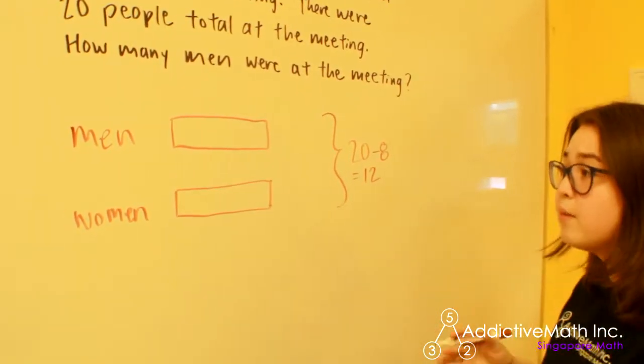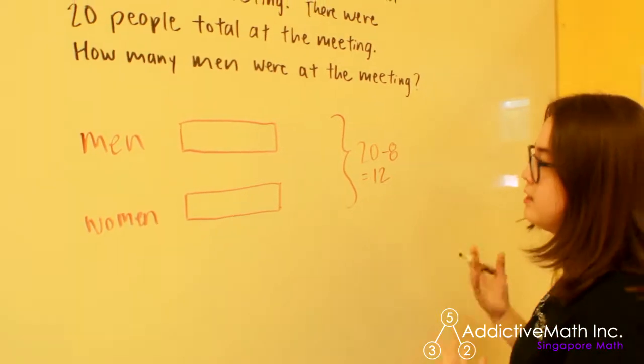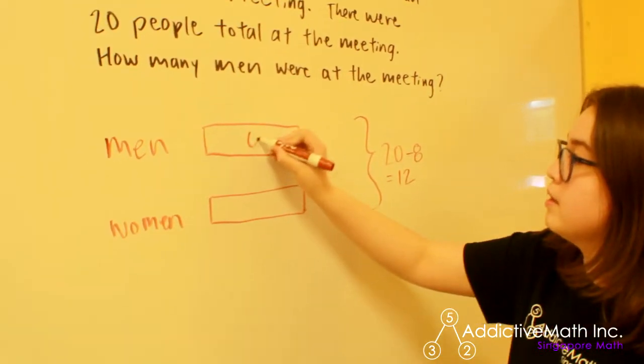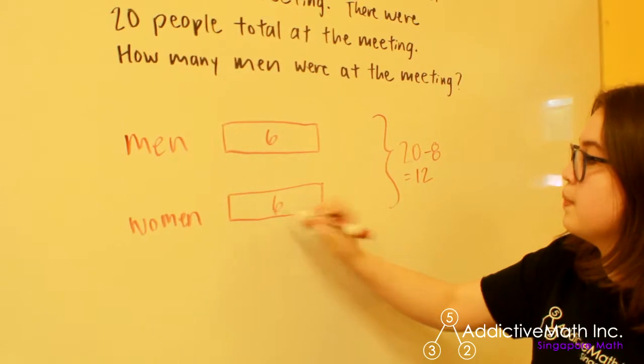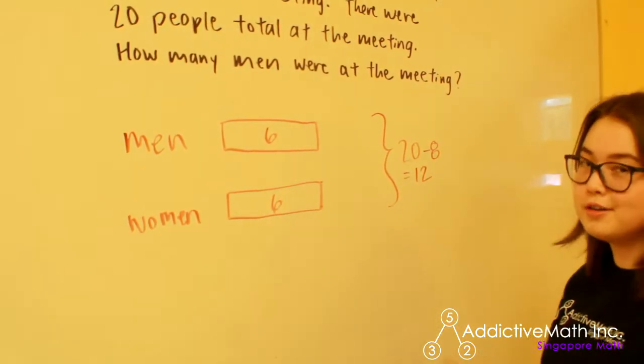And now we can see if we have two bars that are equal in length and it's equal to 12, then each individual bar must be worth six. So now we figured out what our unknown bar is worth.